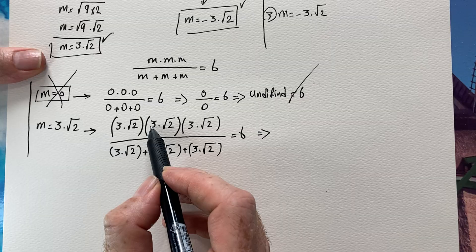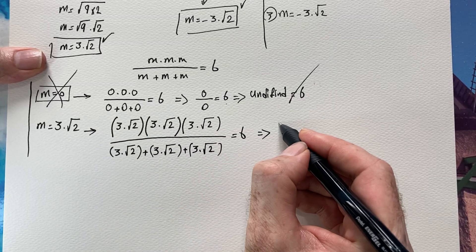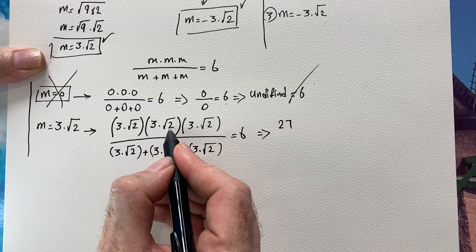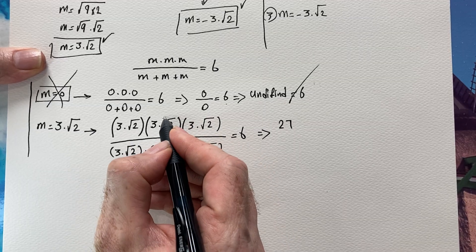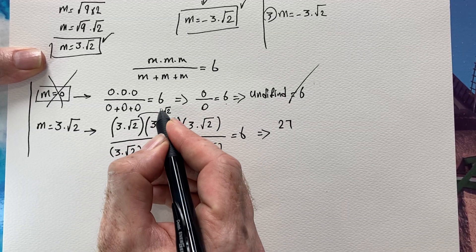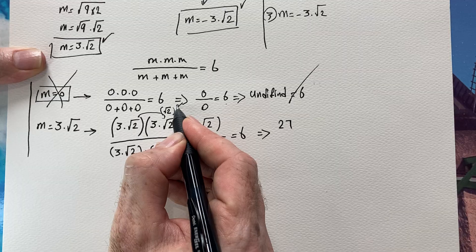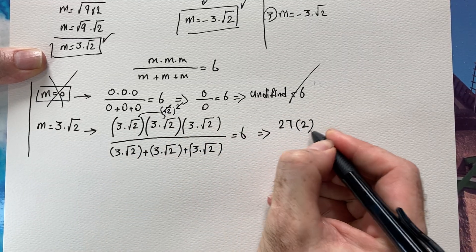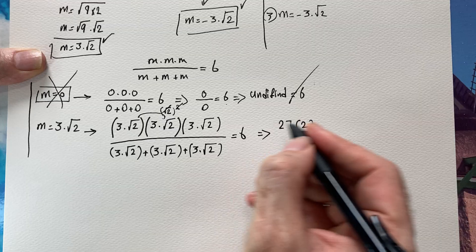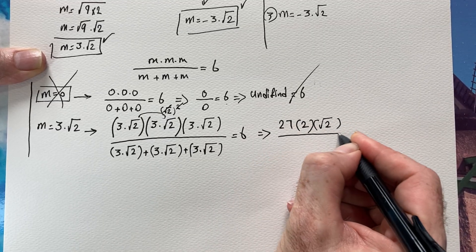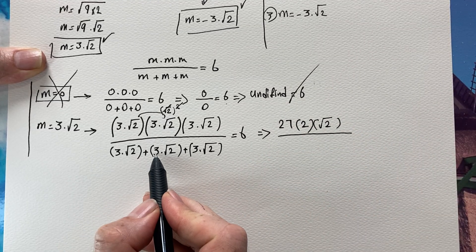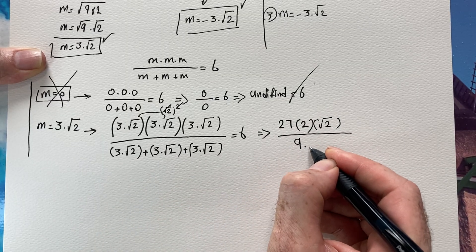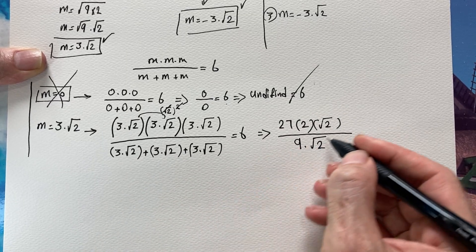Evaluating the numerator: 3 times 3 is 9, times 3 is 27. Then √2 times √2 is (√2)² which equals 2, times √2 leaves one √2 remaining. So the numerator is 27 times 2 times √2. The denominator is 3 plus 3 plus 3 plus 3 equals 12, or equivalently 4 times 3 equals 12, giving 12√2... wait, the denominator simplifies to 9√2 as there are three terms summing to 9√2.